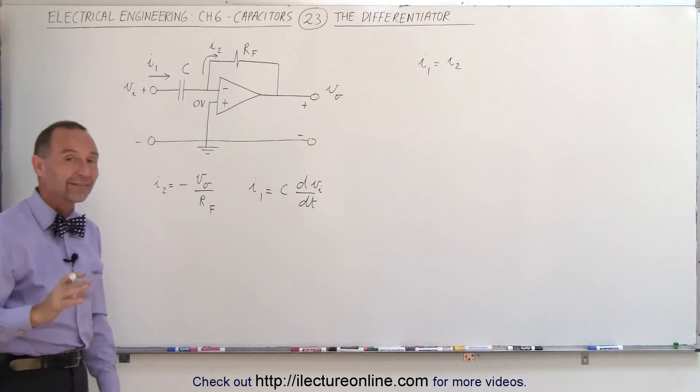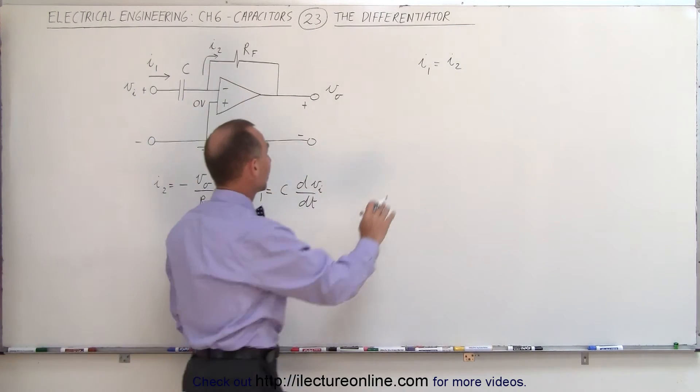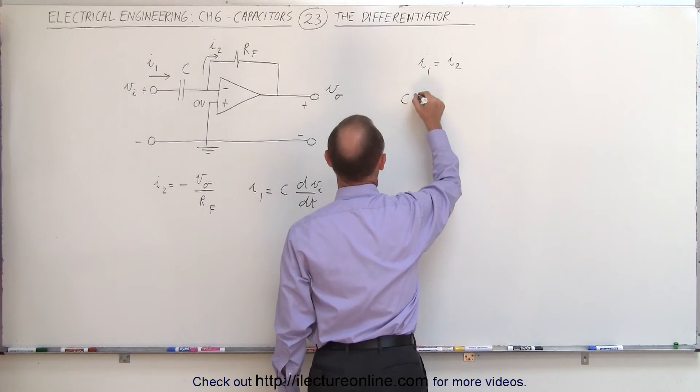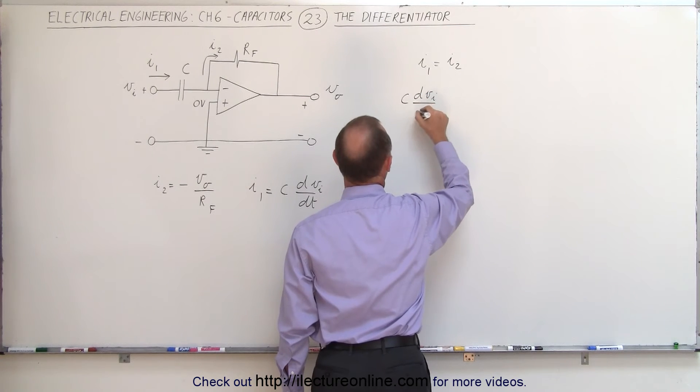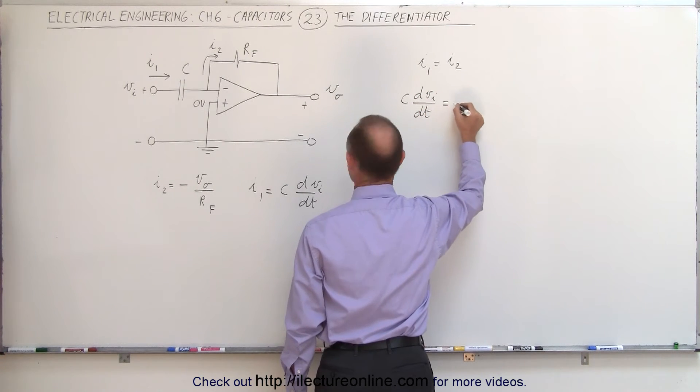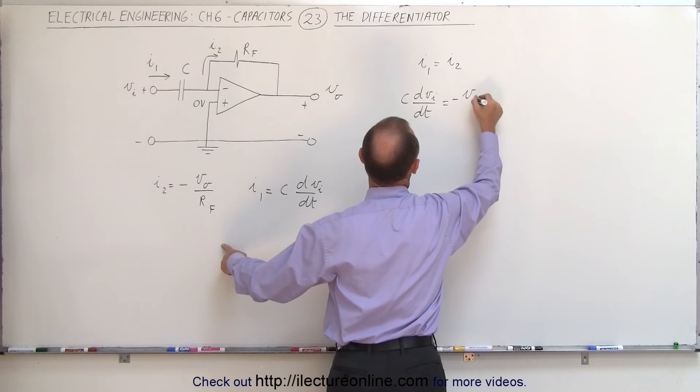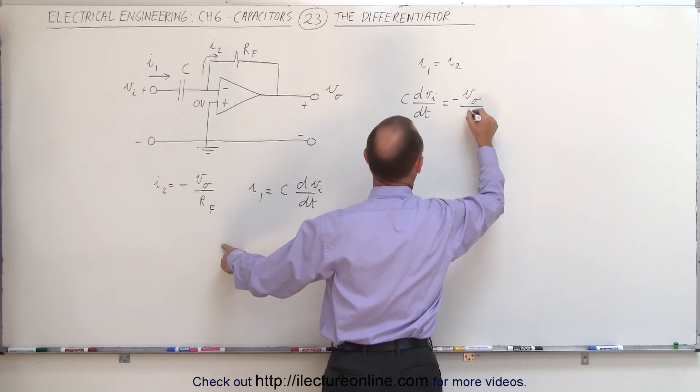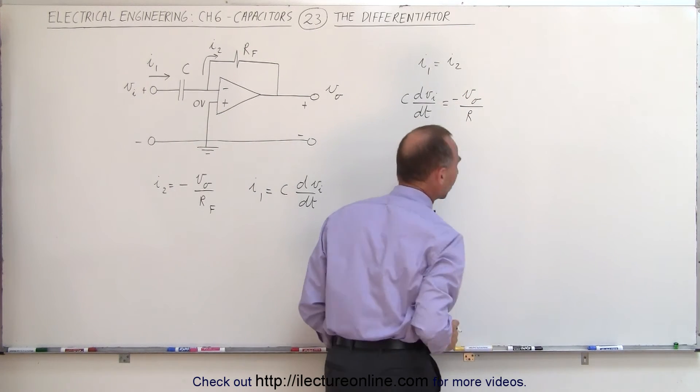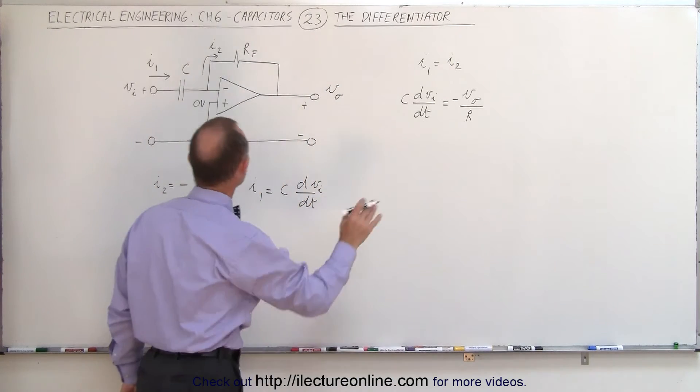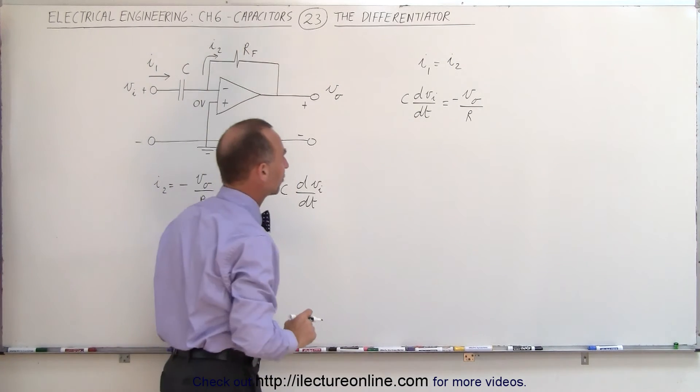Of course, we can then set those two equal to each other. We can then say that the capacitance times the input voltage with respect to time is equal to the negative of the output voltage over the feedback resistor. And we're just going to write it as R, because we know that R is indeed here the feedback resistor.